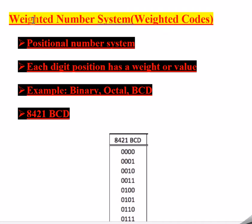So, what is a weighted number system or weighted code? Weighted means having some weight. In a number system, each digit will have a particular weight. A number system is basically a representation, and weighted codes or weighted number systems are basically positional number systems, meaning each position of a particular digit has a particular weight.